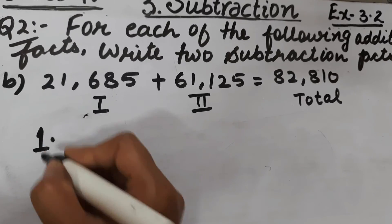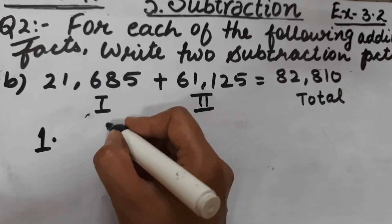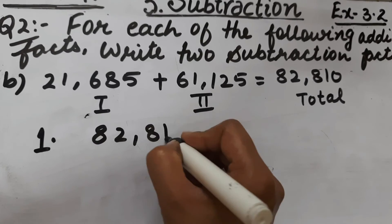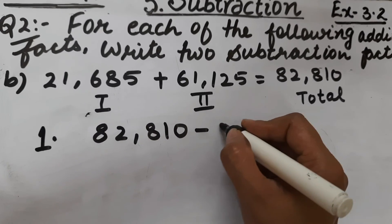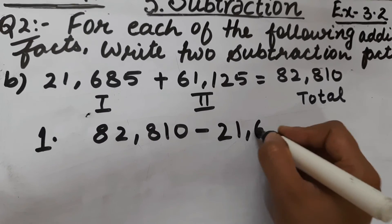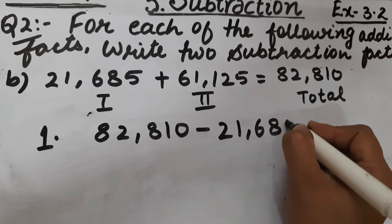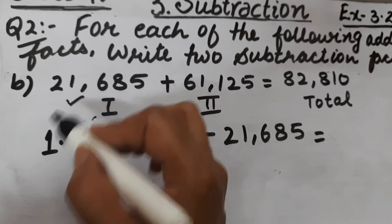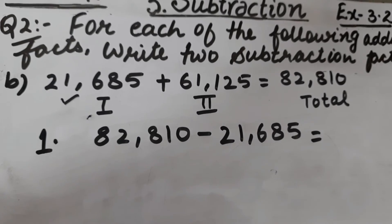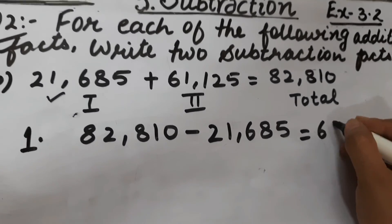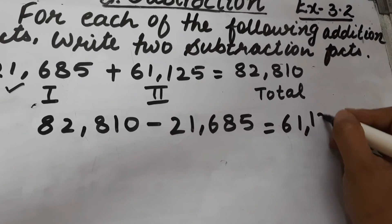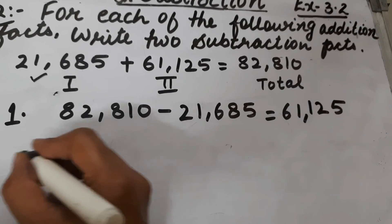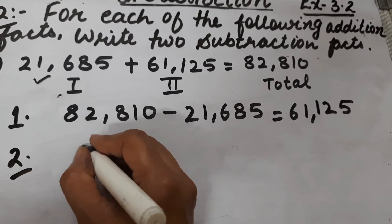First one: if we subtract the first addend from the total, we will get the second addend. And if we subtract the second addend from the total, we will get the first addend. These are the two subtraction facts for this addition fact.